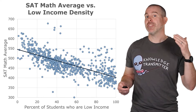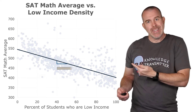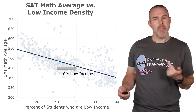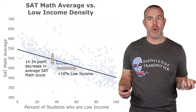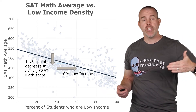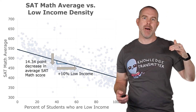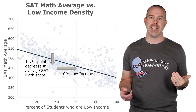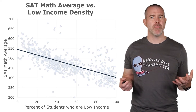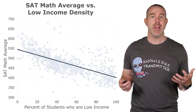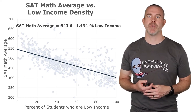Looking at the graph, we can see that slope: plus 10% low income is the run, and then a decrease of negative 14.34 on the SAT math is the fall. For every additional 10% low income students, we predict a drop of 14.34 points on the SAT math score on average. Now, our model for SAT math average is that y-intercept minus the slope times the percent low income.